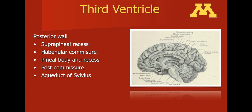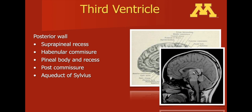The posterior wall is bordered by the habenular commissure and the pineal body. In the picture on the right, the area of the posterior wall of the third ventricle is highlighted with an arrow pointing to the pineal gland. This is an important structure as it is sometimes the site of various tumors, such as pineal tumors.